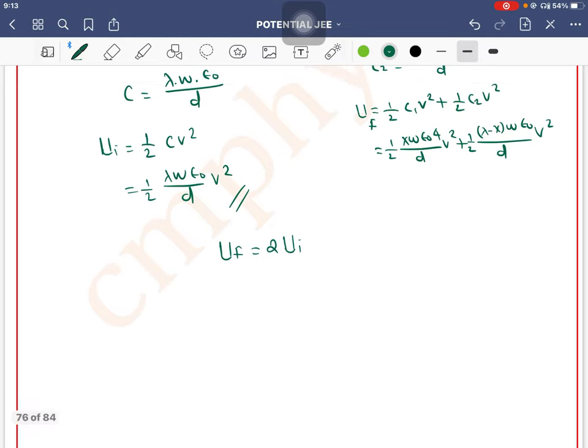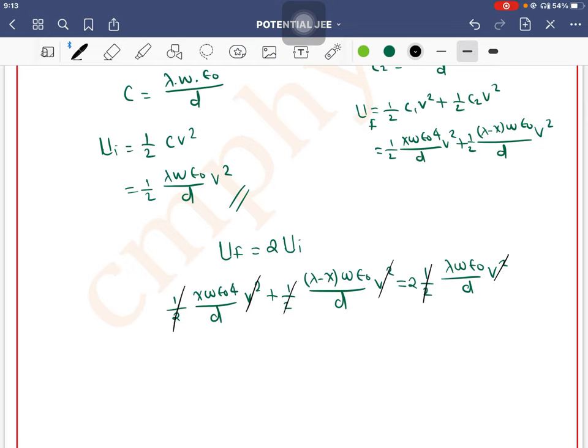Okay, this is your final energy. Now it says final energy is two times initial energy. So final energy: half x W epsilon not 4 divided by D V square plus half lambda minus x W epsilon not by D V square equals two times half lambda W epsilon not by D V square. So V square, V square, V square, half, half, half will cancel.